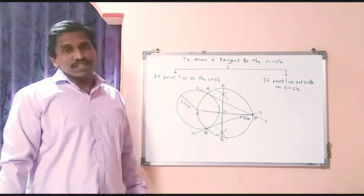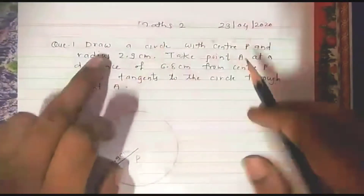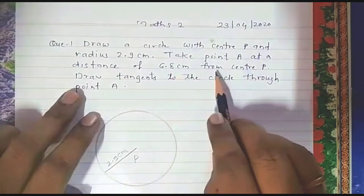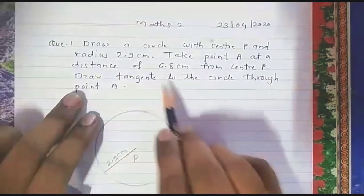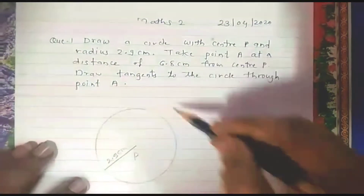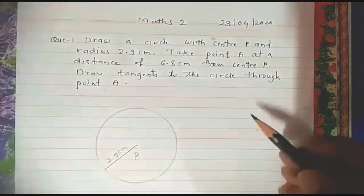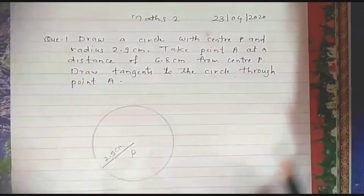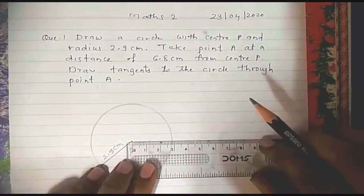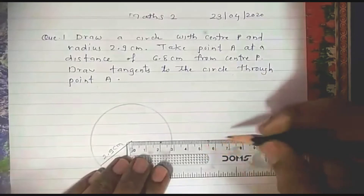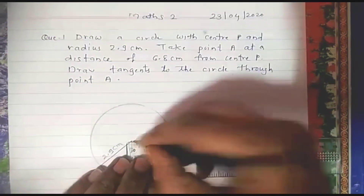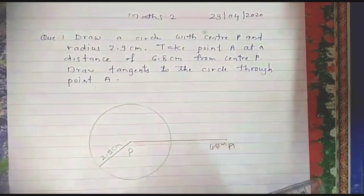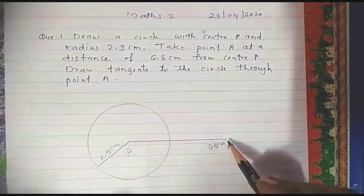Let us solve an example using geometrical instruments. Draw a circle with center P and radius 2.9 centimeters. Take point A at a distance of 6.8 centimeters from center P and draw tangents to the circle through point A. I have drawn a circle with center P and radius 2.9 centimeters. Now I have to draw point A which is at a distance of 6.8 centimeters from point P. This distance is greater than the radius, so definitely point A lies outside the circle.